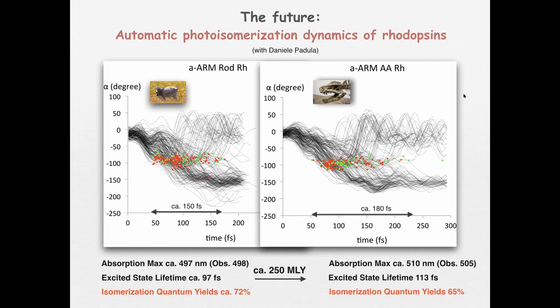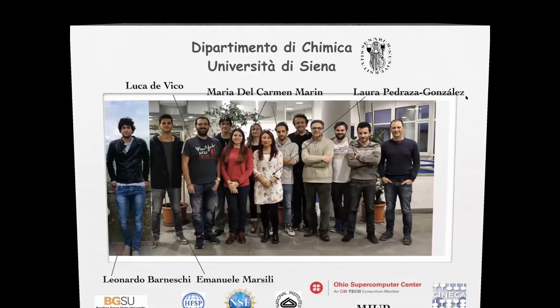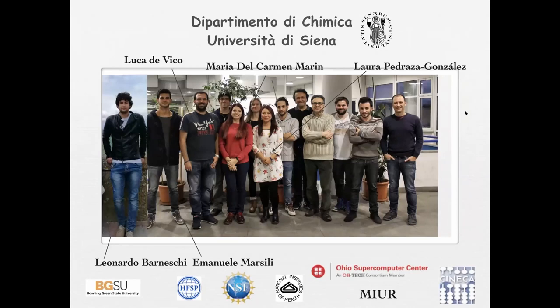That's the end of my talk. To summarize: we are very much interested in developing methods for automatically generated QM/MM models in both the ground and excited state, with the target of helping biologists and even evolutionary biologists in their characterization of photoresponsive proteins. Thank you very much. The work was done by my group in Siena — Luca De Vico, Maria del Carmen Marín, Laura Pedraza González, Leonardo Barneschi studying fluorescent rhodopsins, and Emmanuel Marsili now doing his PhD in the UK.